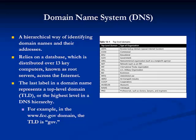DNS is a hierarchical way of identifying domain names and their addresses. It relies on a database which is distributed over 13 root servers across the Internet. Because it is distributed, DNS will not fail catastrophically if one or a few computers go down.